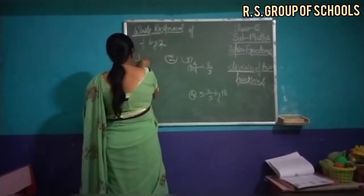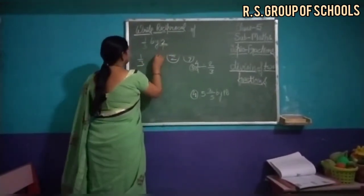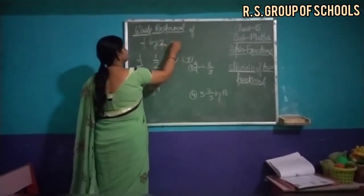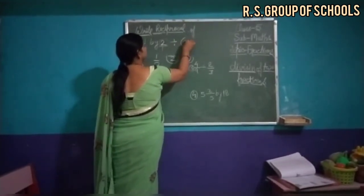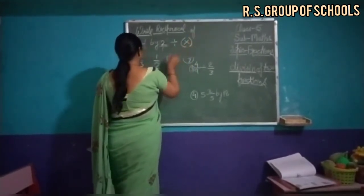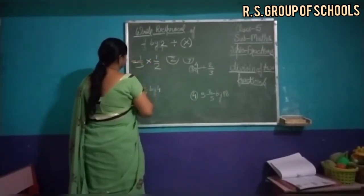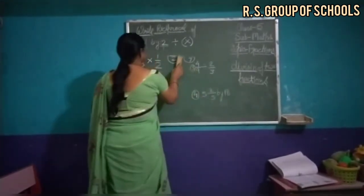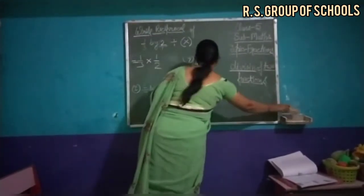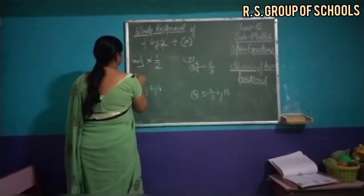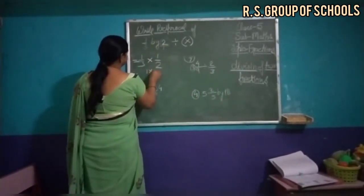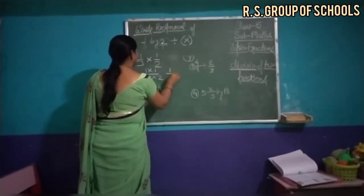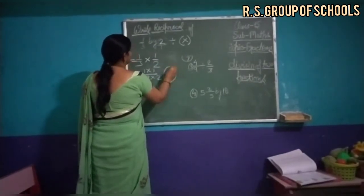1 upon 3 and 1 upon 2, and when we reciprocal, the division sign converts into multiply. Now 1 into 1, 3 into 2, 1 upon 6. Answer is 1 upon 6.